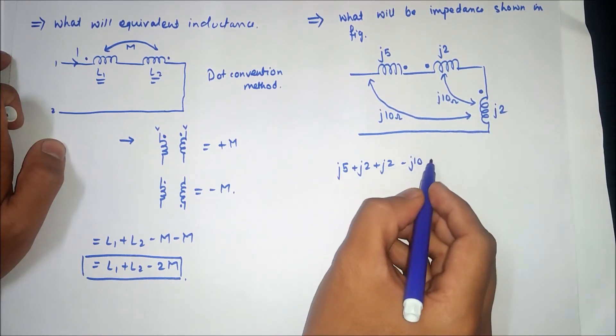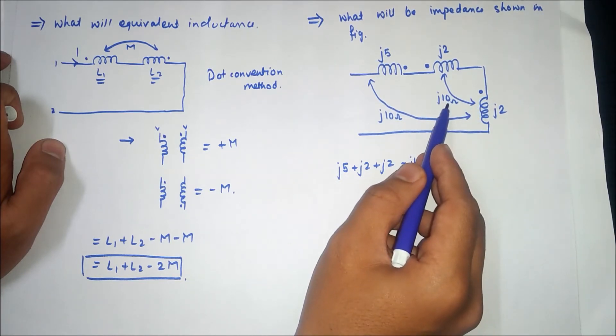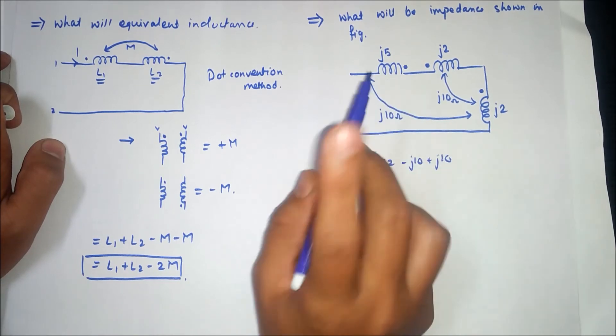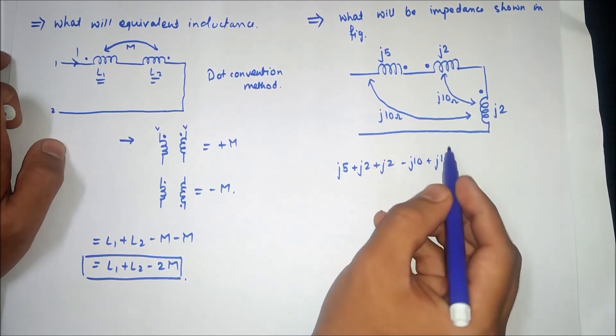For J2, same direction current entering, and here also current is entering, so it will be plus J10. Now for J2 there are two mutual inductances: one is J10 and second one is also J10. So direction is - for J5 and J2 is minus, J2 and J2 is positive.